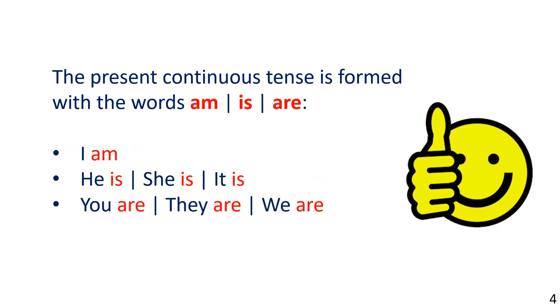The Present Continuous Tense is formed with the words am, is, and are: I am, he is, she is, it is, you are, they are, we are.